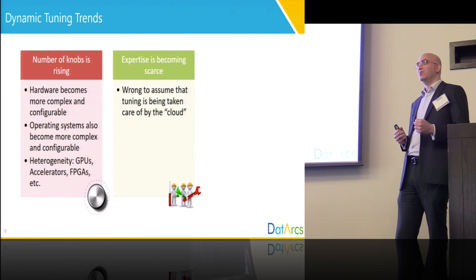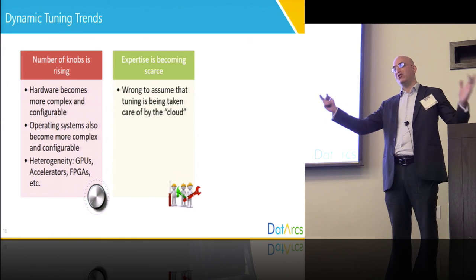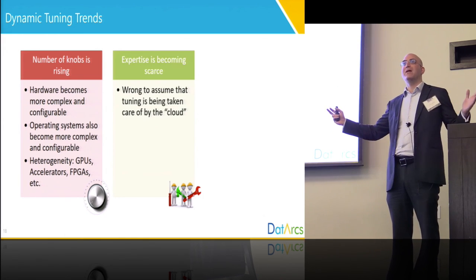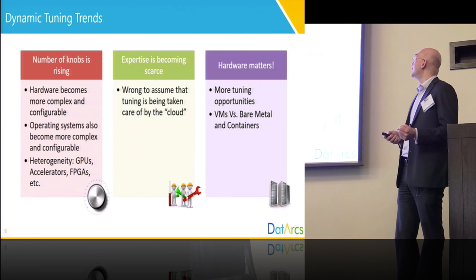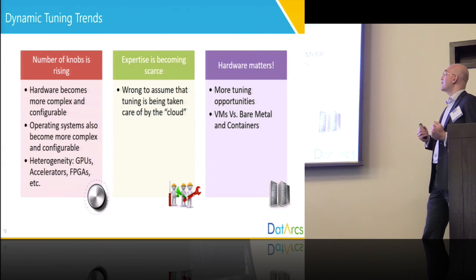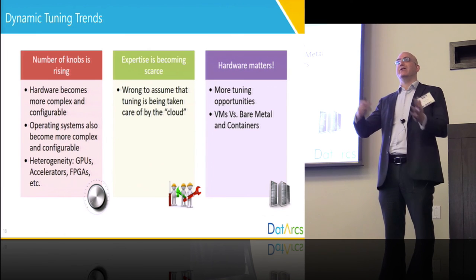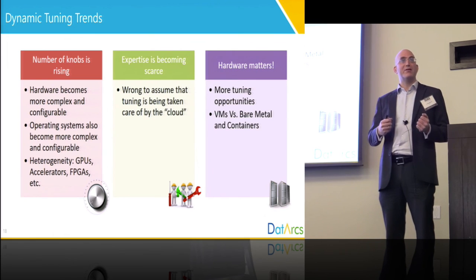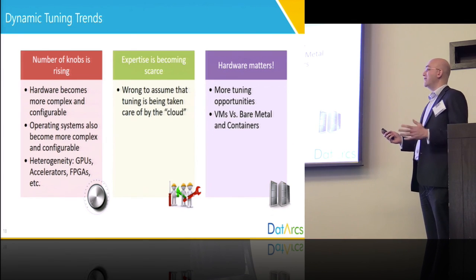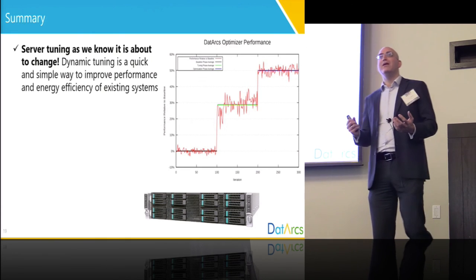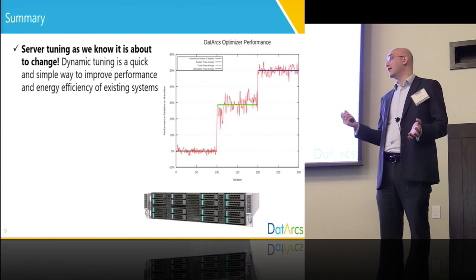The second trend is a shrinking number of people who can actually understand all of these systems and perform tuning well. In the general computing space, there's an assumption that the cloud takes care of all the tuning — of course this is nonsense because you have to do the tuning yourself. Hardware really matters because there are more opportunities to tune. And we see the trend of containers and bare metal versus virtualization — not only does bare metal get you more performance, now you can actually tune it for your application. For all these reasons, the importance of dynamic tuning is rising.